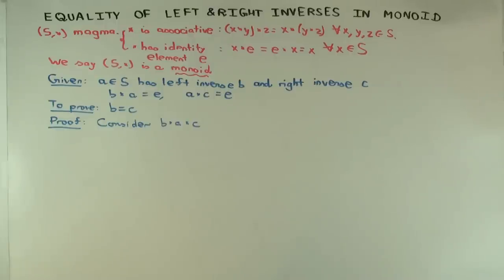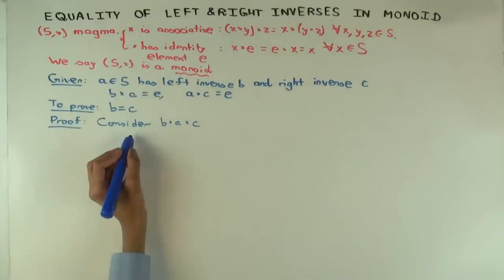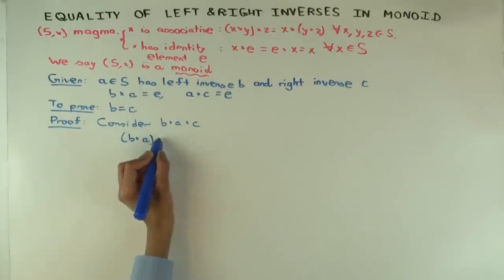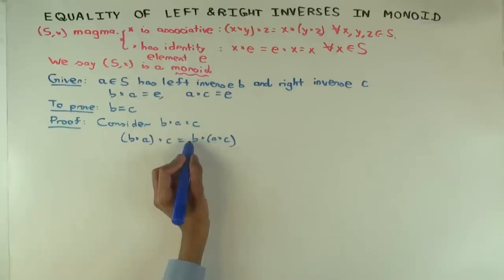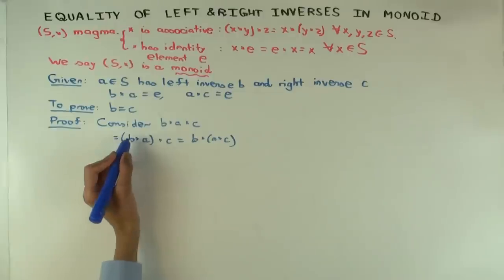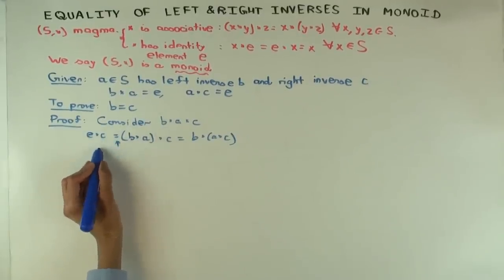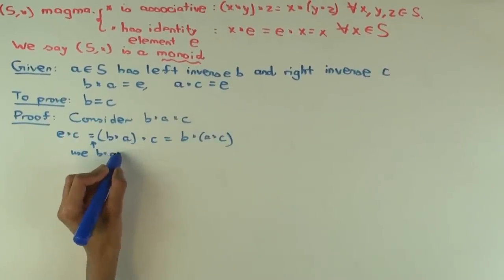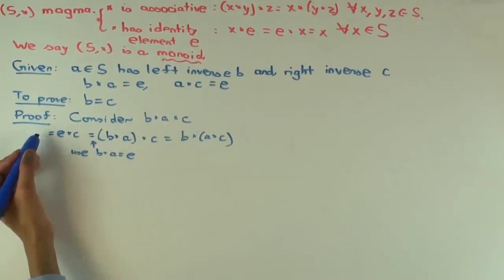Okay, so you could consider B star open paren A star C close paren. And it's also equal to the other direction, which is other associativity, which is open paren B times A close paren times C. Okay, now how does this simplify? What's B times A? Okay, so we use B times A as E. And what does E star C simplify to? Using that E is the identity, what does E star C simplify to? C.